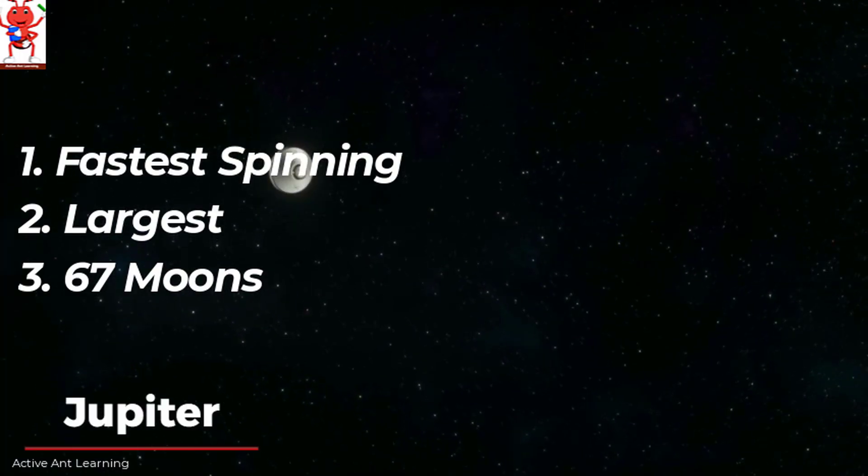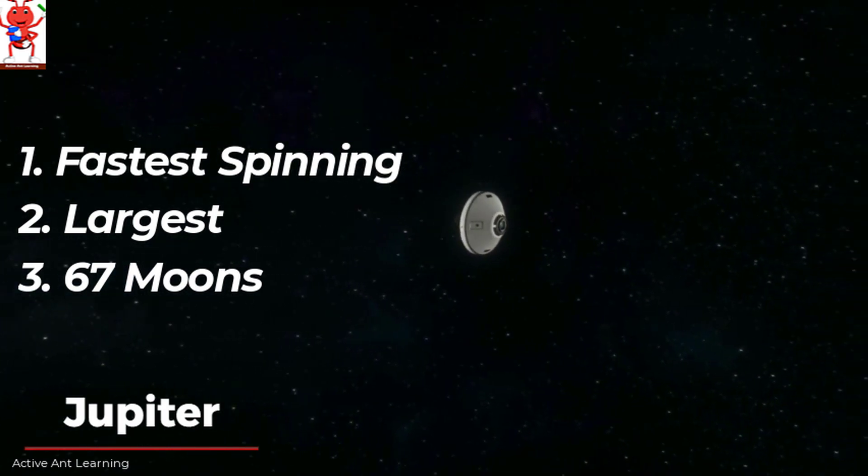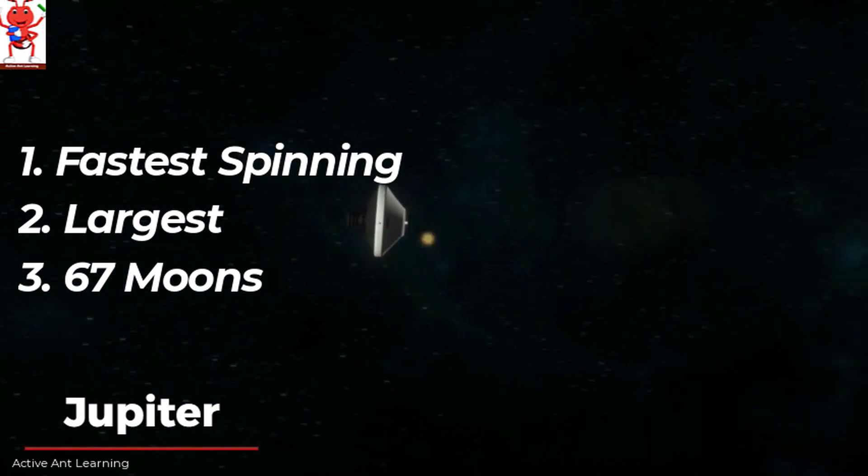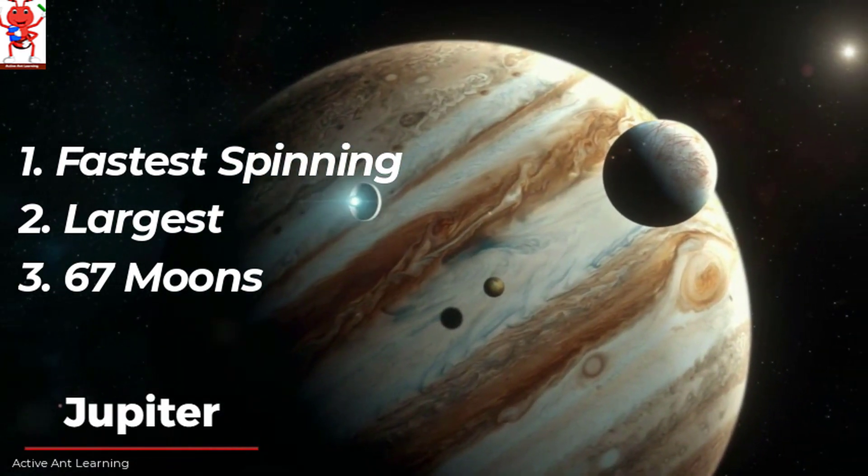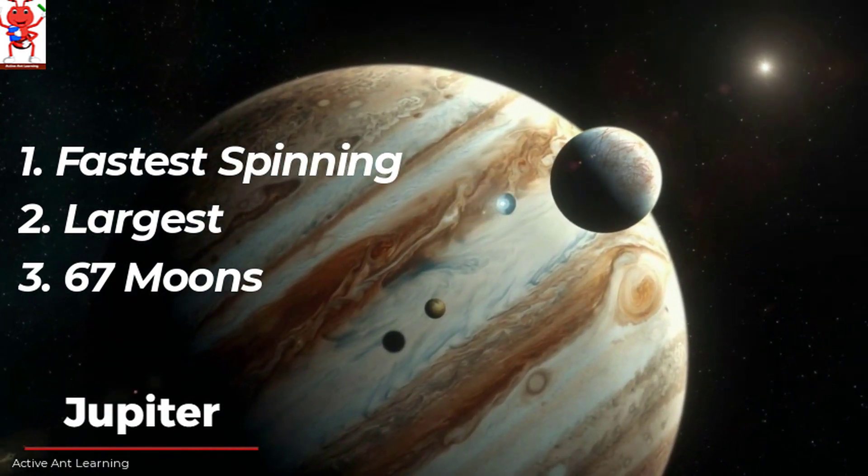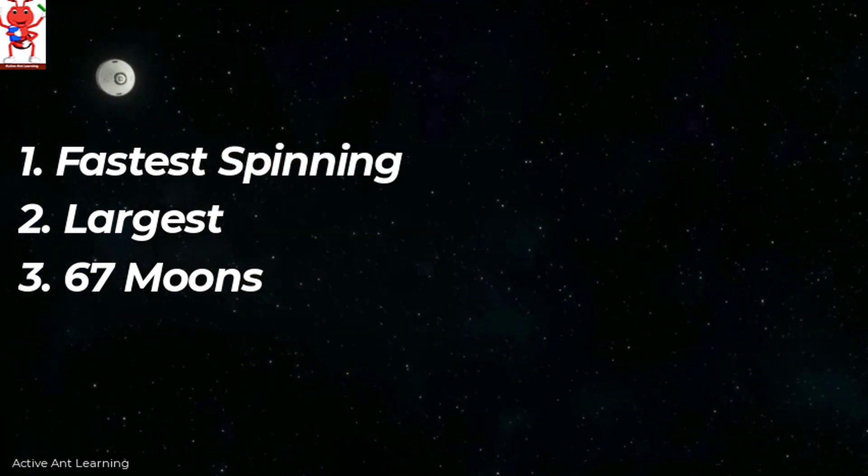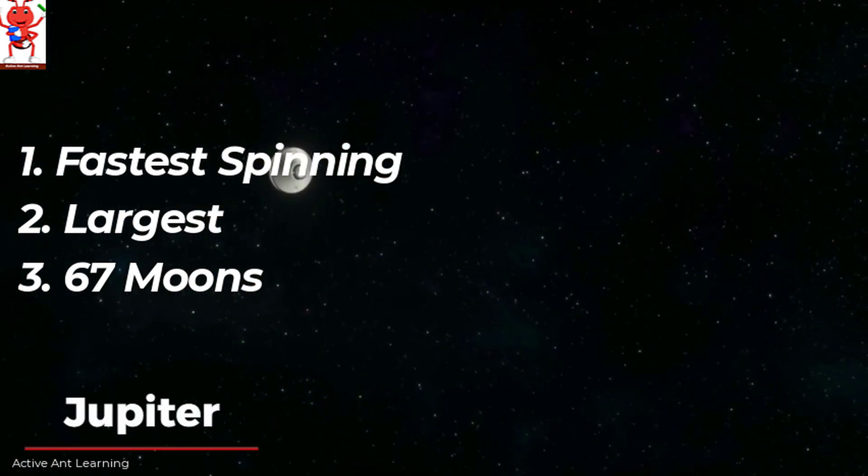Jupiter is the fifth planet from the sun. It is the fastest spinning planet in the solar system. It has 67 moons. Yes Jupiter is the largest planet in the solar system. It is so big that all the other planets in the solar system could fit inside it.